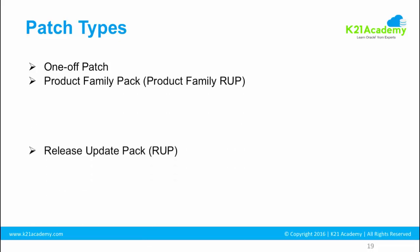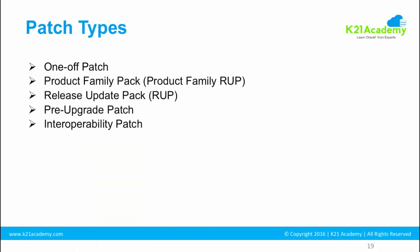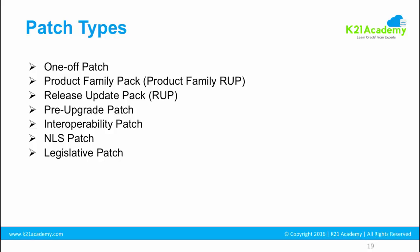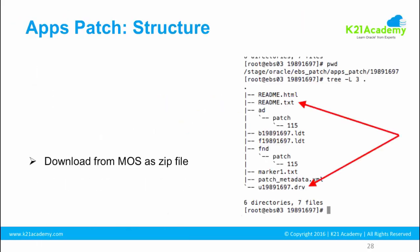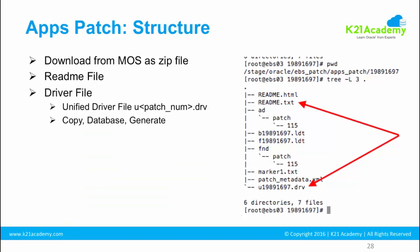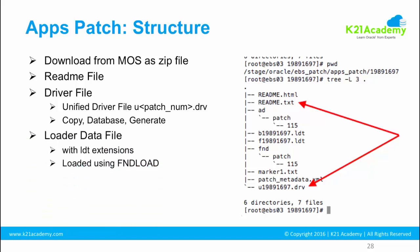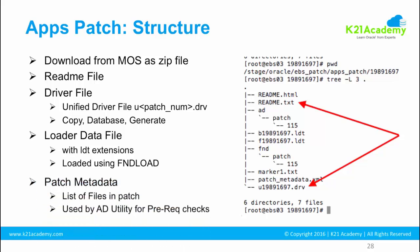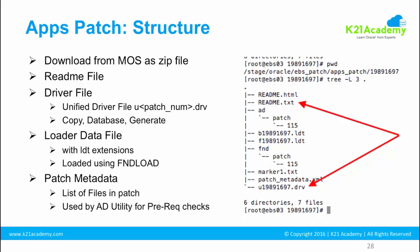We looked at different types of patches: one-off patch, product family pack, release update pack, pre-upgrade patch, interoperability patch, NLS patch, and legislative patches. Then we looked at the patch structure — the zip file and the readme, the driver file which is the U driver file that includes copy, database, and generate options — plus the data loader file and patch metadata.